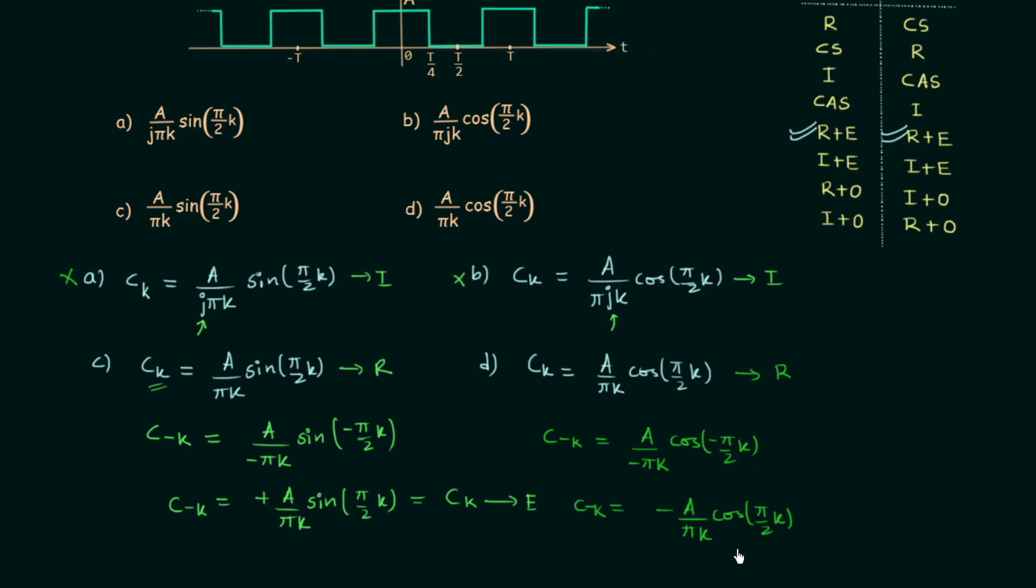So C(-K) will be equal to minus A over pi*K cos(pi/2*K). So this is the value of C(-K) and it is equal to minus CK. So this is the condition for odd signals and thus in this case CK is odd. So we are getting real and odd, therefore option D is incorrect option and option C is the correct option.